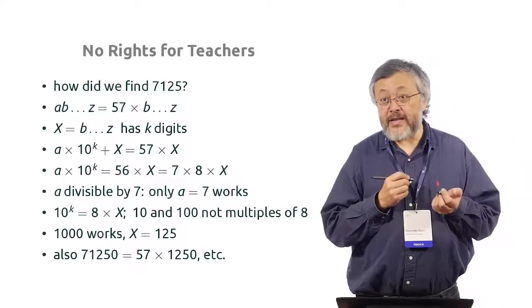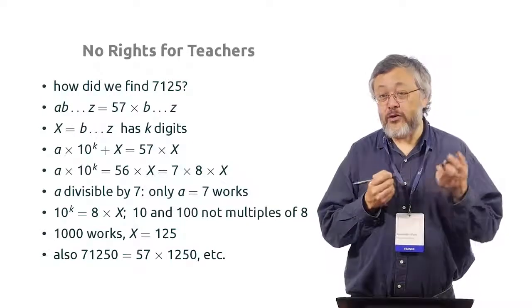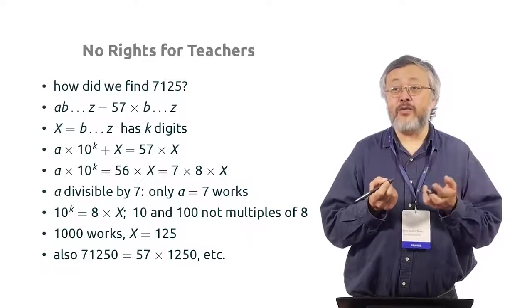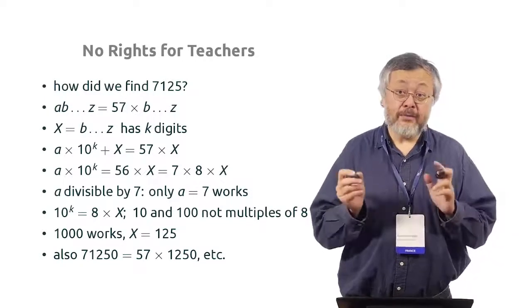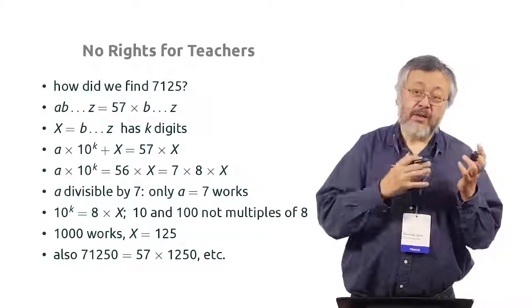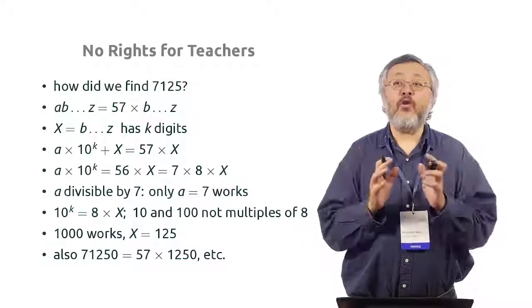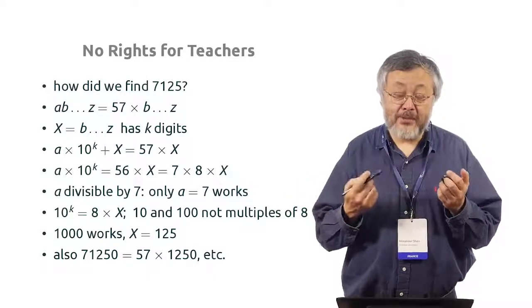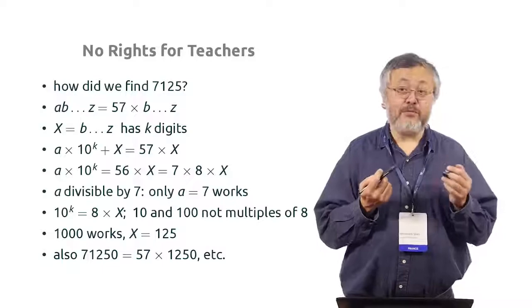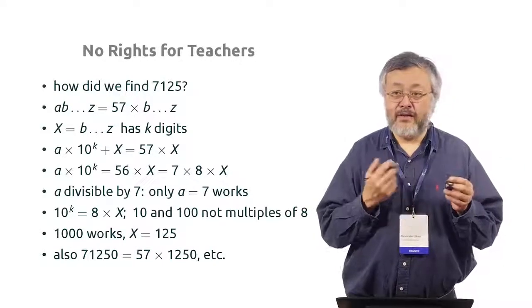And of course, we can take bigger powers of 10. If we take not 1000, but 10,000, we get just one additional zero. So there are other solutions. But other solutions are just the same plus zero at the end. So now we see how this problem can be solved. And of course, it's useful because it helps us to solve similar problems with a bit different number.